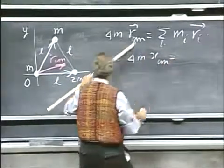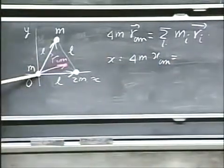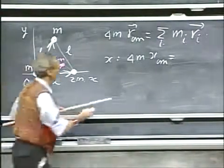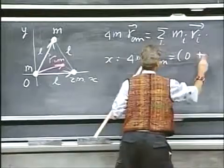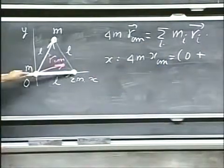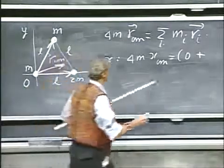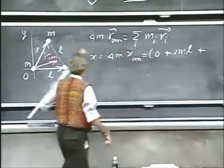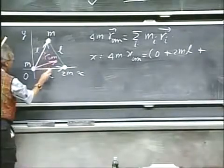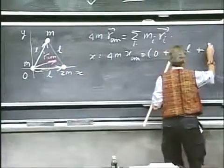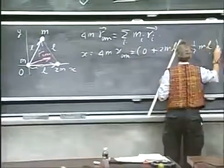So now I have that 4m times the x component of the center of mass equals this mass times the x component of its position vector, which is zero, plus this mass, which is 2m, times the x position, which is l, so plus 2ml, plus this mass times the x component of this mass, which is one-half l. So that gives me plus one-half ml.